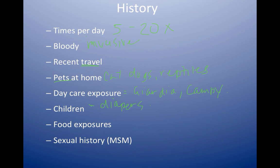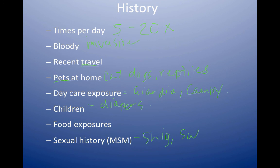Finally, take a sexual history. Men who have sex with men are at risk for certain pathogens that could be transmitted through rectal or anal sex — shigella, salmonella, and giardia in particular.